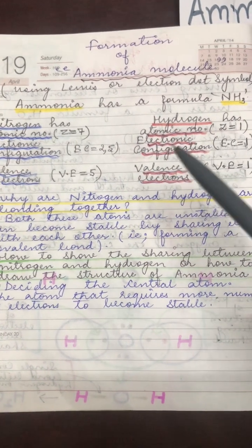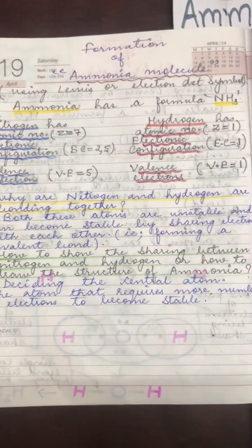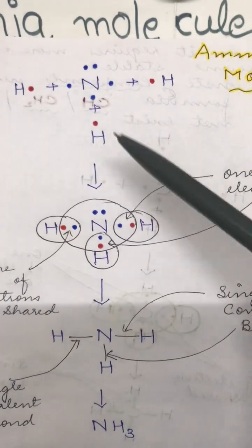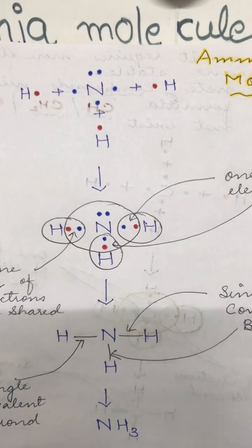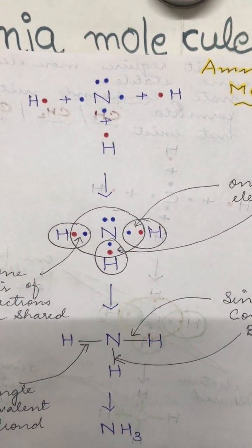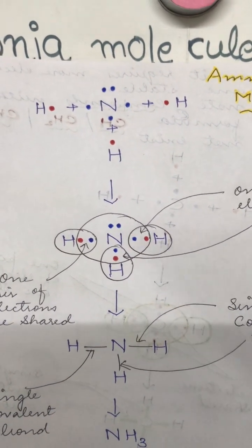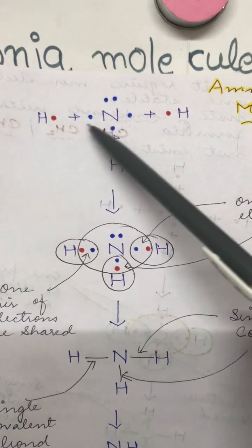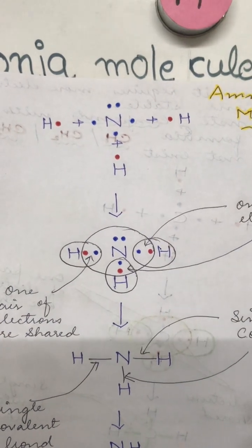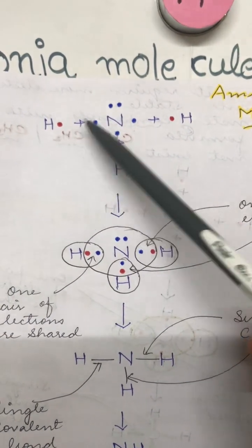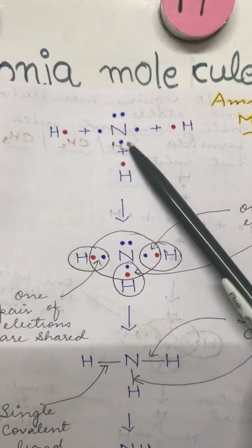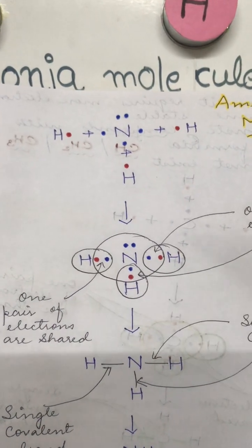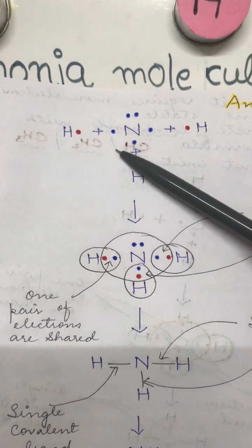It is very clear that the atom acting as the central atom is nitrogen, since nitrogen requires three more electrons to become stable. Therefore, nitrogen is the central atom. We show the nitrogen atom in the center, and since nitrogen requires three electrons to become stable, one hydrogen atom can provide only one electron to nitrogen.